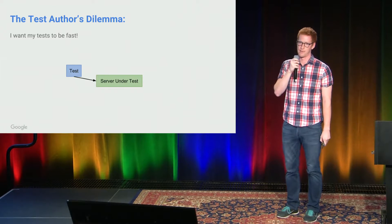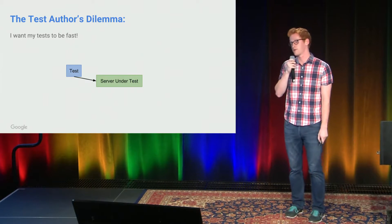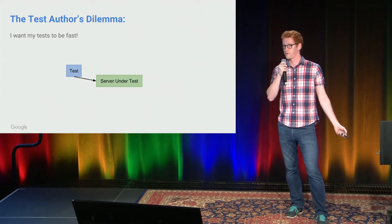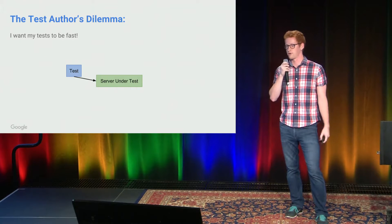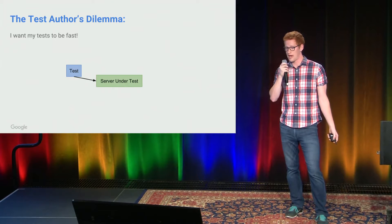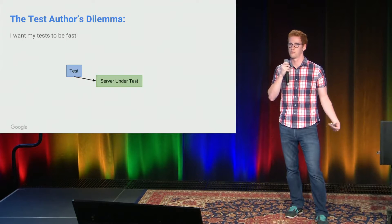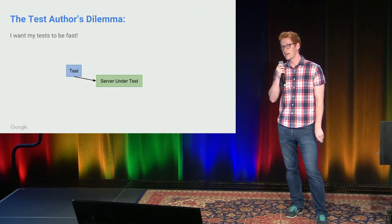Let's start with the test author's dilemma. I am a developer building a new service called 'server under test,' and I really want it to execute well, so I'm going to write a test for it. What happens is my test brings the server up, exercises some logic, and brings the server down. Right now, that test is going to execute very, very fast, because I haven't integrated with any backends.